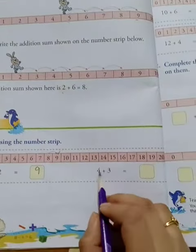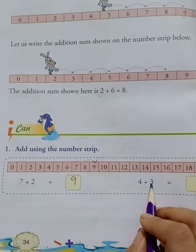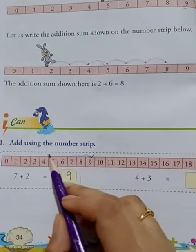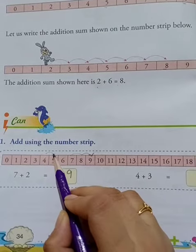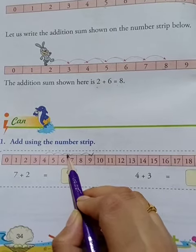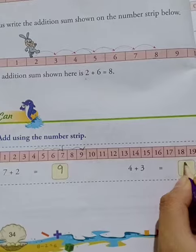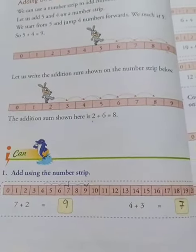Next, four plus three. Starting at four, we count: one, two, three. The answer is seven. Okay, that's all. Thank you.